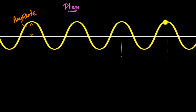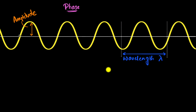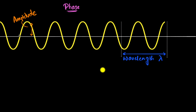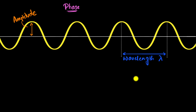For example, the distance between two consecutive peaks is what we call the wavelength, represented by the symbol lambda. This would represent short wavelengths, and this would represent long wavelengths.